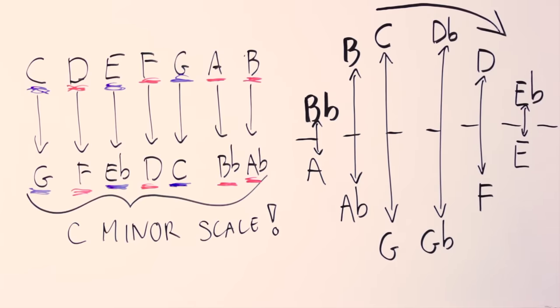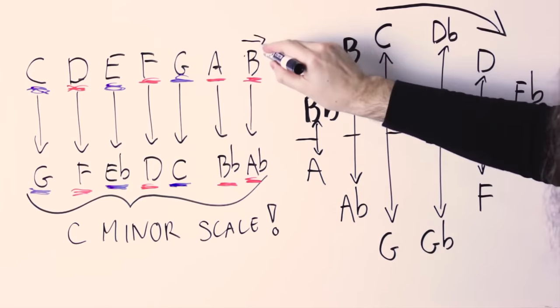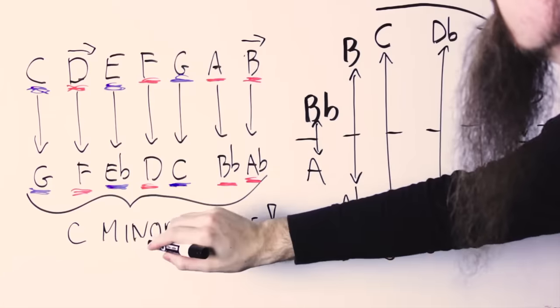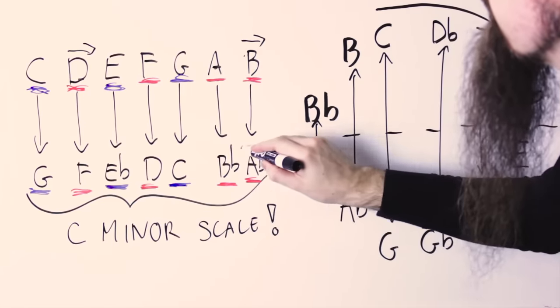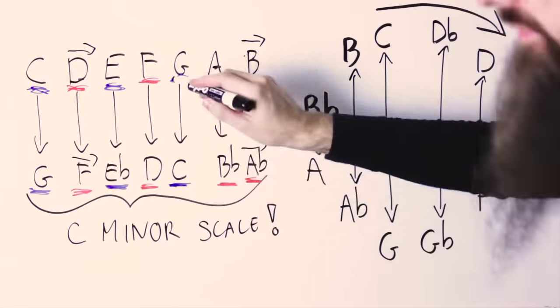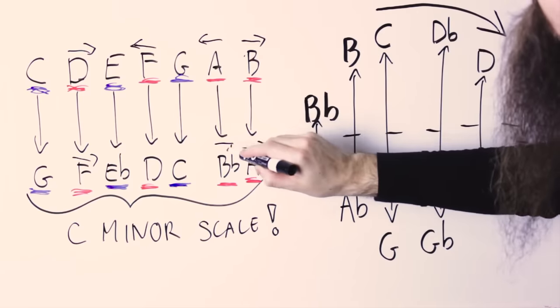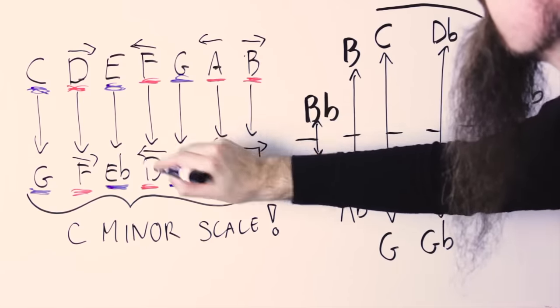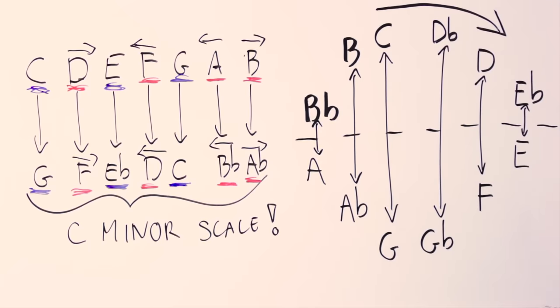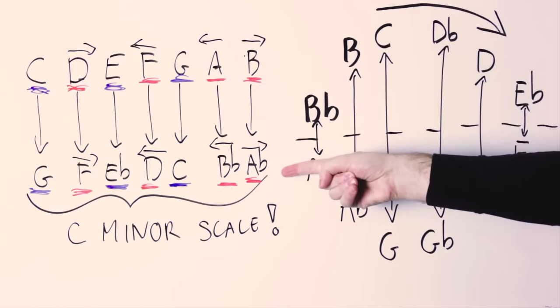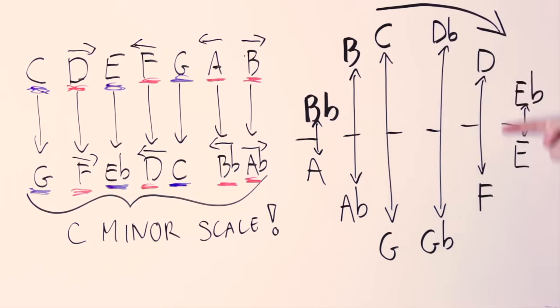But it's even better than that, because all the active notes that wanted to resolve up, like B or D, get transformed into notes that want to resolve down, like A flat or F, and vice versa. So here is what negative harmony is. It's to take a melody or a chord or a chord progression and transform it this way, note by note.